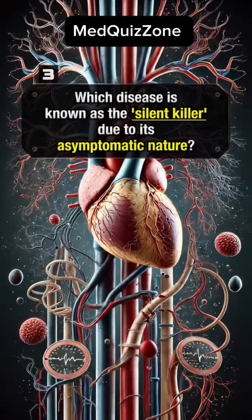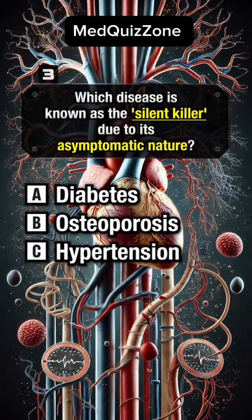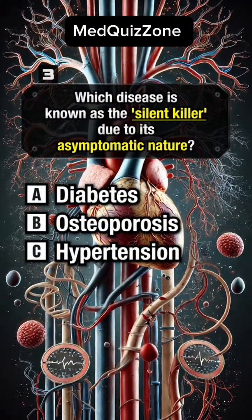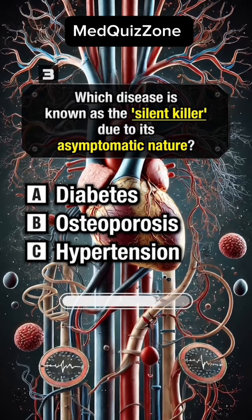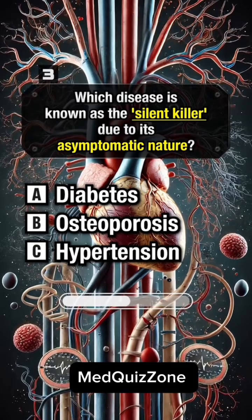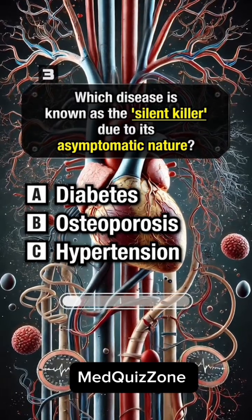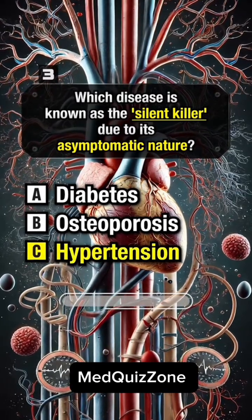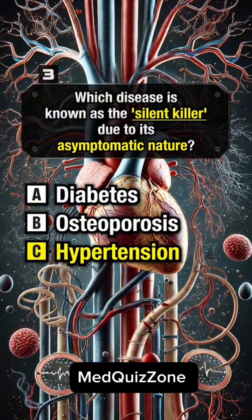Which disease is known as the silent killer due to its asymptomatic nature? Answer C, hypertension.